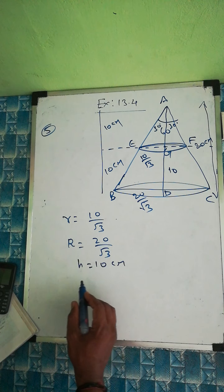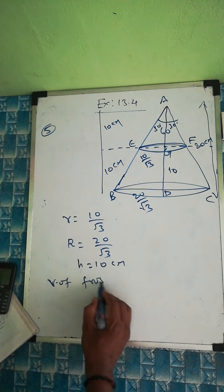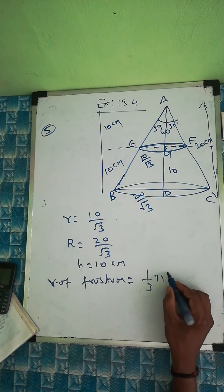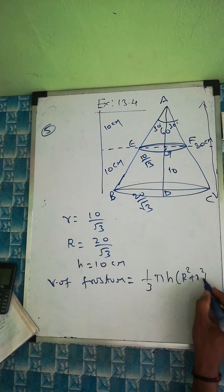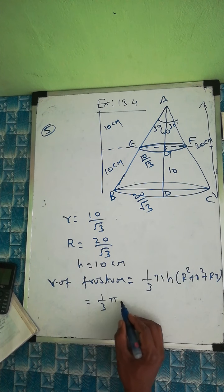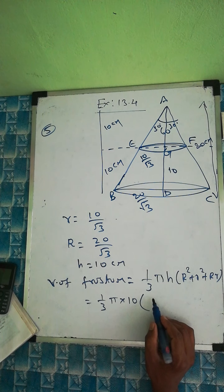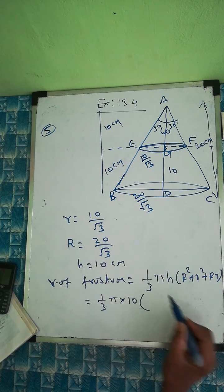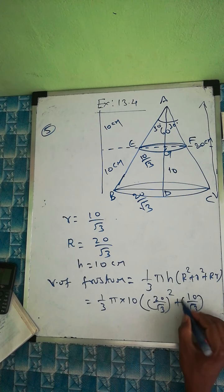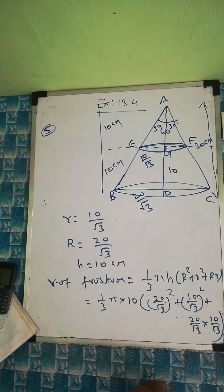Now we apply the formula: Volume of first term (frustum) = (1/3)π h (R² + r² + Rr). Substituting: h = 10, R = 20/√3, r = 10/√3. So we get (1/3)π × 10 × (400/3 + 100/3 + 20/√3 × 10/√3).